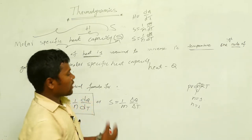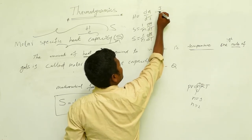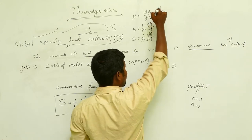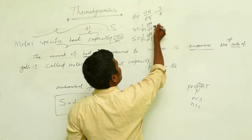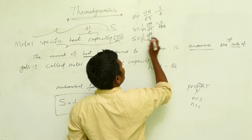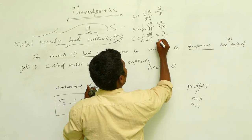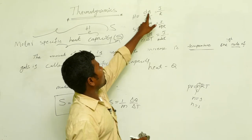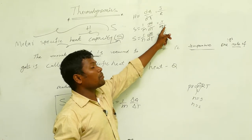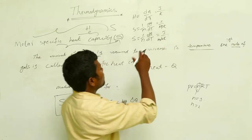The units (measurements): Heat is measured in joules or calories. Temperature is measured in kelvins. So for heat capacity H = dQ/dT, the unit is joule/kelvin. For specific heat S = (1/m) dQ/dT, the unit is joule/(kg·kelvin). For molar specific heat S = (1/n) dQ/dT, the unit is joule/(kelvin·mole).